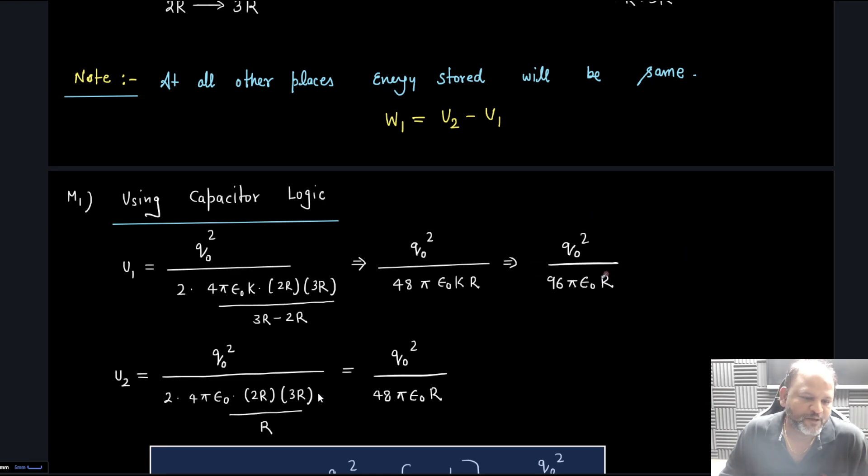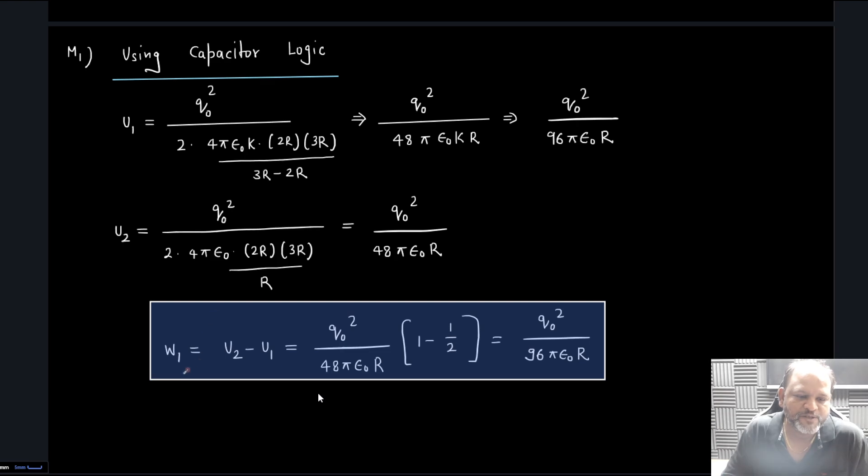Now U2 I can calculate using same logic. Now there is air so q0 square by 2c, 4π epsilon 0 r1 r2 by r2 minus r1. Since k is missing, it is double of that. Now easily I can find W1 which is U2 minus U1, getting q0 square by 96π epsilon.